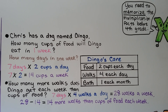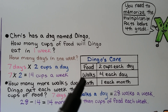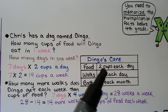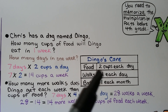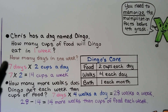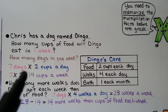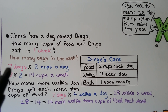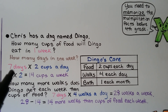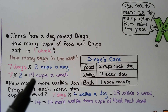Chris has a dog named Dingo. How many cups of food will Dingo eat in 1 week? Looking at the table, food is 2 cups each day. There are 7 days in 1 week, and if he's getting 2 cups a day, we do 7 days times 2 cups a day. That's 7 times 2, which is equal to 14 cups a week.